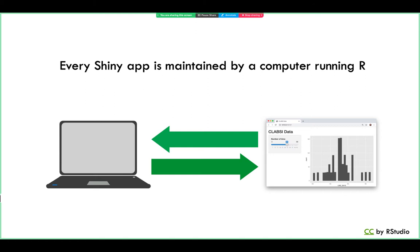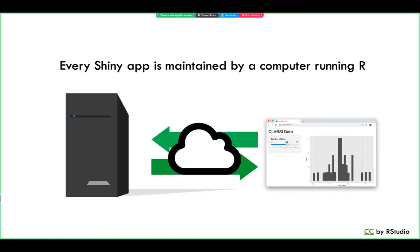Every Shiny app works like this visually: there's a web page the user visits, and a computer that runs an R session and creates the web page. Right now the computer running R and serving the web page is just my laptop, so the web server is running locally. Even though the Shiny app is shown in my web browser, it's coming straight from my computer. If you want to share the app on the internet or on the CHOP intranet, all you have to do is put the app onto a remote web server that allows outside clients to access it.